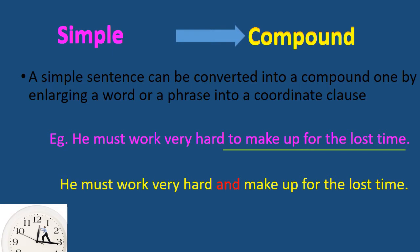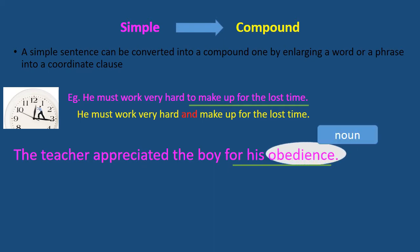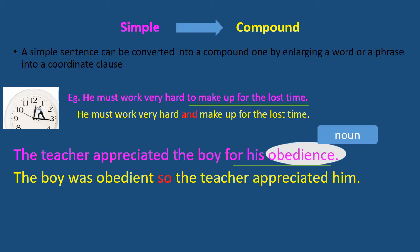'To make' is an infinitive clause, so we change it to a finite clause of 'make.' Next example: 'The teacher appreciated the boy for his obedience.' Now we have the phrase 'for his obedience' which we convert. The noun form is 'obedience,' so we can change it. The result: 'The boy was obedient, so the teacher appreciated him.'